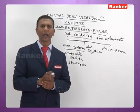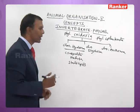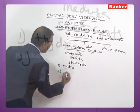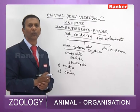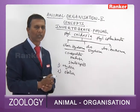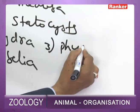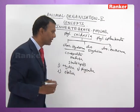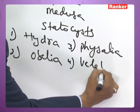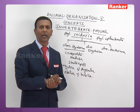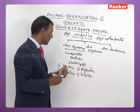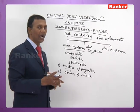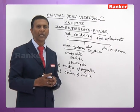Important examples of Hydrozoa include Hydra (freshwater polyp), Obelia (sea fur or zoophyte), Physalia (Portuguese man-of-war), and Velella (little sail or purple sail). All of them are characteristic members of class Hydrozoa.